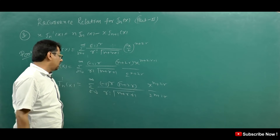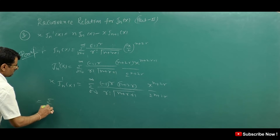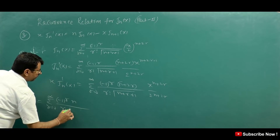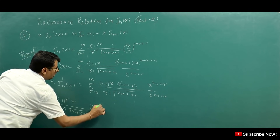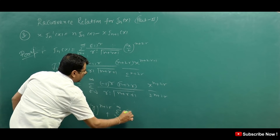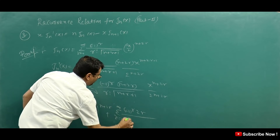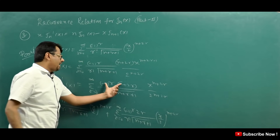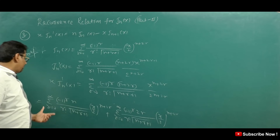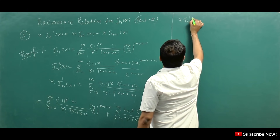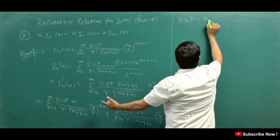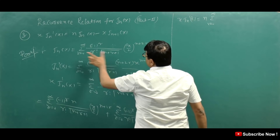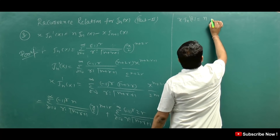So now we have the n part and the 2r part. This gives summation r = 0 to infinity of [(-1)^r · n / (r! · Γ(n+r+1))] · (x/2)^(n+2r), plus summation r = 0 to infinity of [(-1)^r · 2r / (r! · Γ(n+r+1))] · (x/2)^(n+2r).